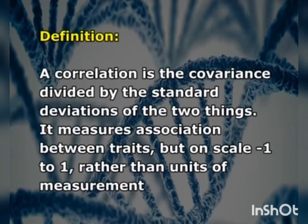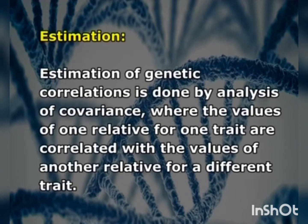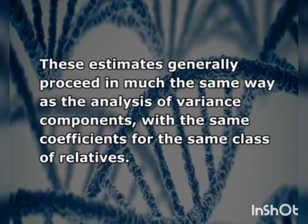Correlations between genotypic effects for different traits are called genetic correlation, also termed RG. A correlation is the covariance divided by the standard deviations of the measures, expressed on a scale of minus 1 to 1 rather than in units of measurement. The estimation of genetic correlations is done by analysis of covariance, where the values of one relative for one trait are correlated with the values of another relative for a different trait.